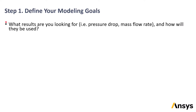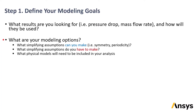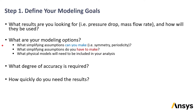In any CFD project, the very first step before you even open the Fluent program should be to define the project goals. It's critical to know what information you hope to gain by doing the simulation — for instance, the pressure drop or the mass flow rate — and also how the information will be used. Once that has been decided, consider the modeling options available: what simplifications you can make, what physical models might need to be included such as turbulence or combustion models. Additionally, consider what degree of accuracy is required and how quickly the results are needed.